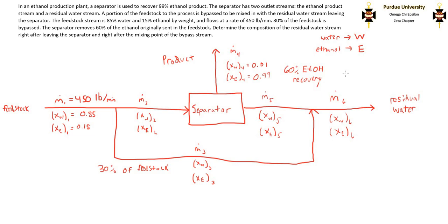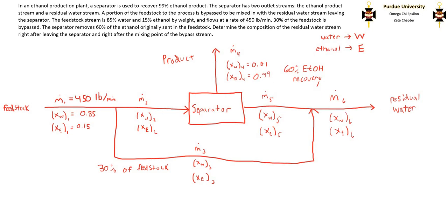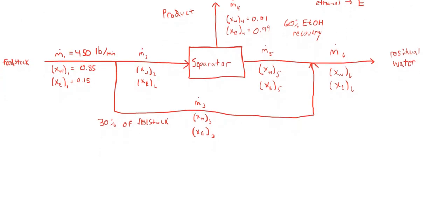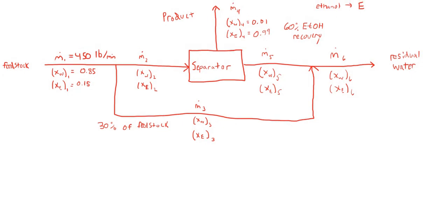This is all the information given from the problem statement. We know the flow rate of the feedstock, the composition of the feedstock, the composition of the alcohol product stream, that 30% of the feedstock is bypassed, and that 60% of the ethanol is recovered in the alcohol product. The easiest place to start is to calculate the mass flow rate of the bypass stream, since we know that 30% by mass of the feedstock is going to be bypassed.